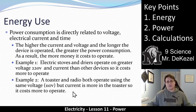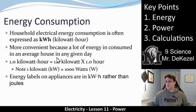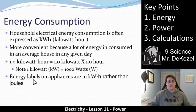So we have another unit that we use to describe appliances, like your dryer, like your stove, like your fridge. Household electrical consumption is often measured in kilowatt hours. It is more convenient because a lot of energy is consumed in an average house in any given day. So essentially, like every thousand watts per hour is a kilowatt hour, and it makes the numbers smaller to talk about. So energy labels on appliances are in kilowatt hours rather than joules, and you'd want that number to be lower.